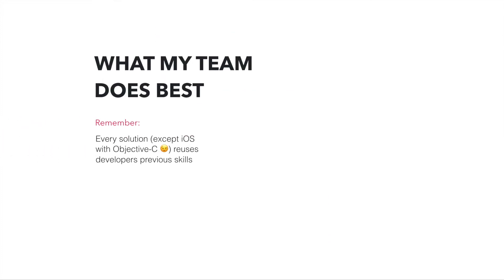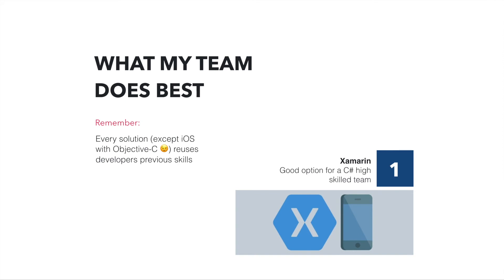Another point to consider is what your team does best. That's something I've seen taken for granted in some companies. Every solution is thinking about what skills the developers using them have previously. If your team is highly skilled in C#, why not go with Xamarin? Xamarin is probably the best fit because they know how to deal with C#, they know the language and the Mono environment — everything else is just the mobile implementation, making the learning curve much lower.